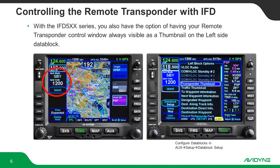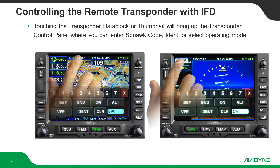Whichever way you do it, it makes it super easy. You can just touch on any of the transponder data blocks or the thumbnail, and it will bring up the transponder control panel where you can set the squawk code, IDENT the transponder, or change modes.